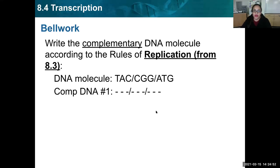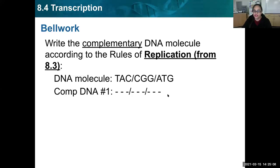All right, most of you got them correct. TAC: the T pairs with the A, the A pairs with the T, and the C pairs with the G. CGG pairs with GCC — the curly letters all stick together. And ATG pairs with TAC; it's just the reverse of the first one. If you did not get those correct, make sure you review Chargaff's base pairing rules and what goes with what.